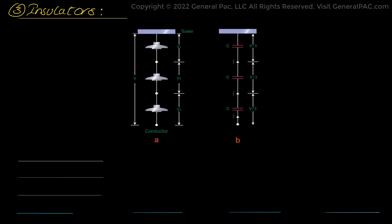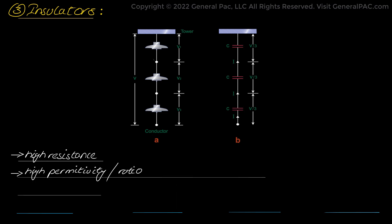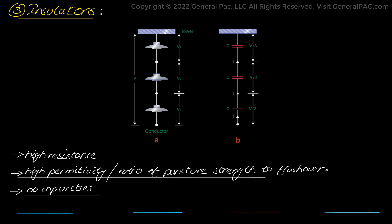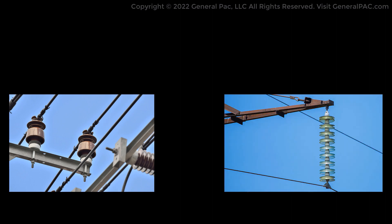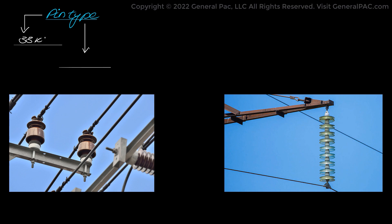Moving on to insulators — current from the line conductor should not flow to the ground through the line support. So it is imperative to provide insulation between the conductor and the line support. Insulators are used to provide that insulation to prevent leakage current. They should have high resistance, high relative permittivity in order to avoid leakage current, be free from impurities, and have a high ratio of puncture strength to flashover, which is a safety factor. Porcelain is the most commonly used material for insulators, but steatite, glass, and certain special composite materials could also be used. The most widely used types include pin type and suspension type, both made from glass and porcelain. Pin types are used for voltages up to 33 kV, after which suspension types are preferred.